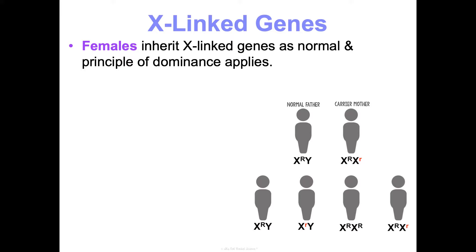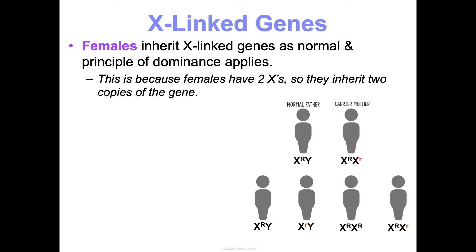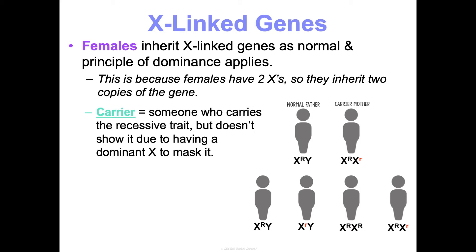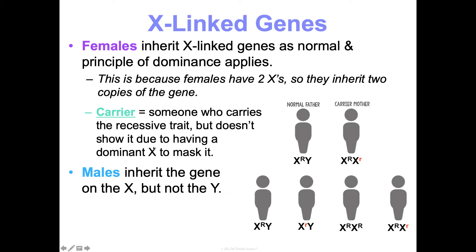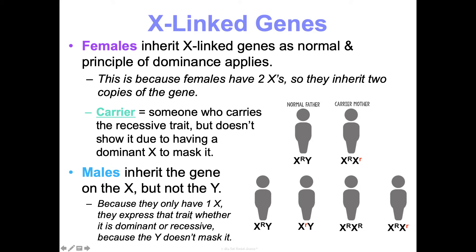For females, X-linked genes follow normal dominance principles — a dominant allele will mask a recessive one. A carrier is someone who carries a recessive trait but doesn't show it because a dominant allele masks it. For example, with hemophilia — a recessive disorder — a normal father would be X(dominant)Y, and a carrier mother would have one dominant normal allele and one recessive hemophilia allele on her other X, but she doesn't show the disease because of dominance.